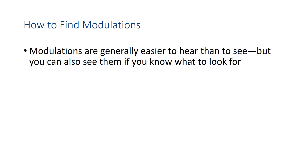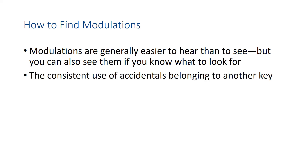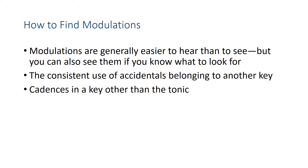Here's some advice for finding modulations in music. Usually it's easier to hear them than to see them, but if you know what to look for, you can spot them in the score too. First, look for a consistent use of accidentals belonging to another key — if you're in C major and start seeing B flats everywhere consistently, perhaps you've modulated to F major. Most importantly, listen for and look for cadences in the other key, as cadences confirm the modulation and distinguish it from a brief tonicization.